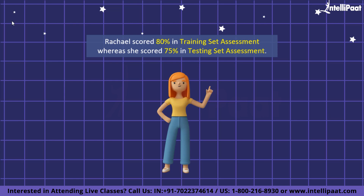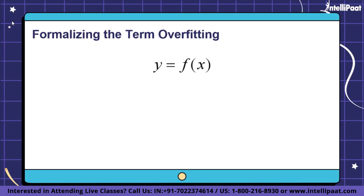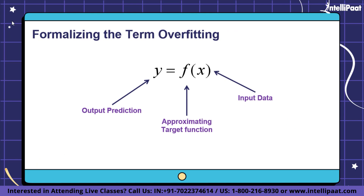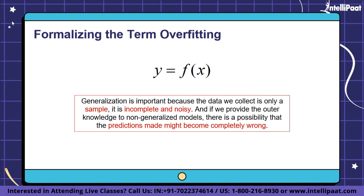Next, we'll theoretically define and formalize overfitting. The machine learning model building process can be understood as approximating a target function f, which converts input data X to an output variable Y. This characterization describes the range of classification and prediction problems. An important consideration is how well the model generalizes to new data — the data we collect is only a sample, it is incomplete and noisy.